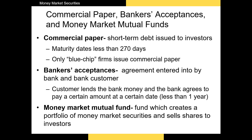Next, we have bankers' acceptances, which are sometimes referred to as something akin to post-dated checks. They are most frequently used to pay foreign suppliers in countries where the buyer has no credit. If a buyer is purchasing supplies from a supplier in a country where the buyer has no credit history, the buyer can lend the bank money. After the supplier delivers their goods, the bank transfers the agreed-upon amount to the supplier. In essence, the foreign buyer is substituting the bank's credit for their own in order to secure supplies.